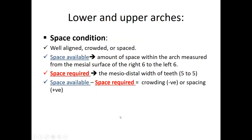Space analysis in the lower or upper arch is a way to describe the space condition. We will have a well-aligned arch, a crowded arch, or spacing. To do this, we need to calculate and measure space available and then space required, and then use this formula: space available minus space required. If the result is negative, this means crowding; if it's positive, it means spacing.